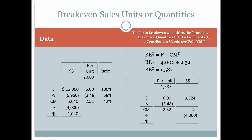So that gave us the same answer for break-even sales. If you were given the break-even quantities, all you have to do is multiply by the sales price per unit to come up with your total dollar break-even sales. On a per-unit basis, we take 1,587 and multiply it by $3.48 in per-unit variable costs, which yields $5,524. When subtracted from $9,524, that gives us $4,000, confirming that we break even.